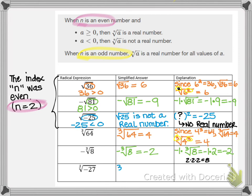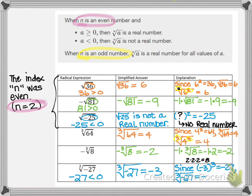Now I have the cube root of negative 27. With an even index we were not able to find a real number answer, but with an odd index I can answer this and say it's negative 3. Even though our radicand is less than 0, since the index n is odd we get a real number answer. The cube root of negative 27 equals negative 3 because negative 3 times negative 3 times negative 3 equals negative 27. With an even index there was no number to square to equal negative 25, but with an odd index we can find that number.